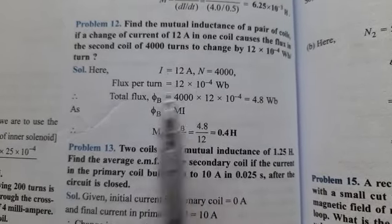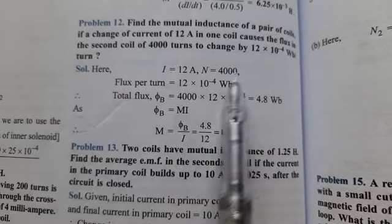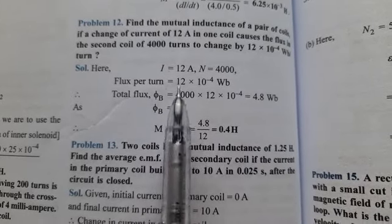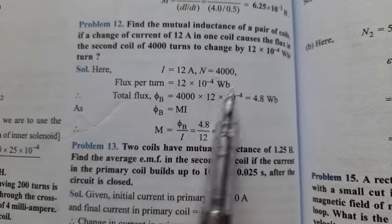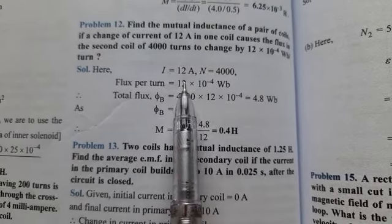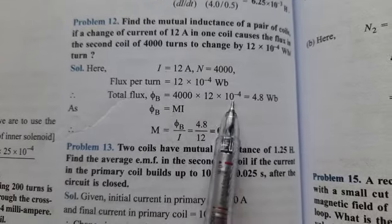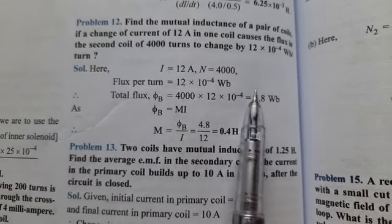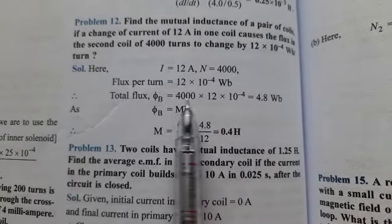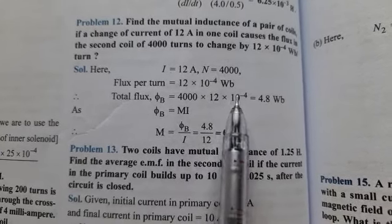Given current and number of turns is 4000. Flux per turn is 12 into 10 raised to minus 4. Total flux equals number of turns into flux per turn.